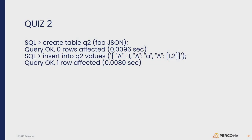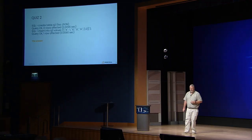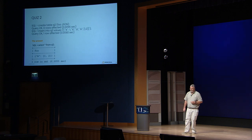Here's a quick little quiz. We created a table called Q2 with a column of type JSON, and we're going to insert some information. If you notice, we have a JSON document with three key-value pairs — all with the key of uppercase A. What is the value in that table? Well, in this case, the last one wins.